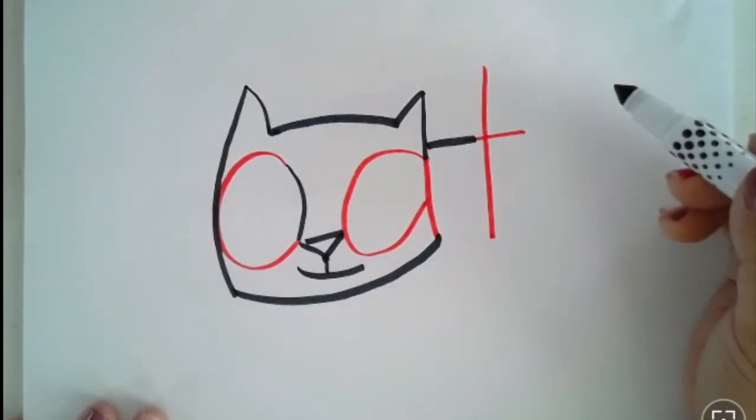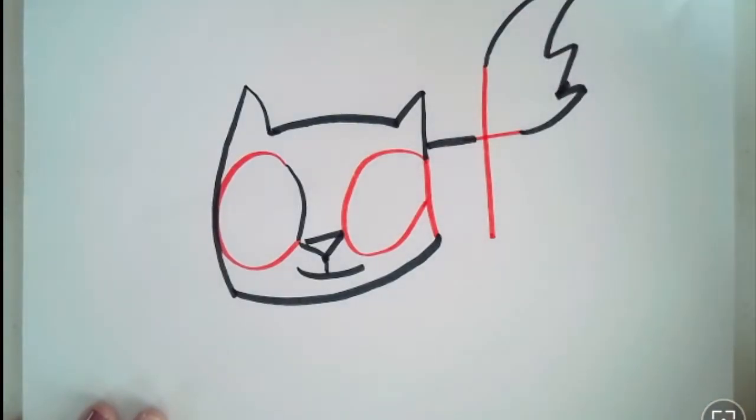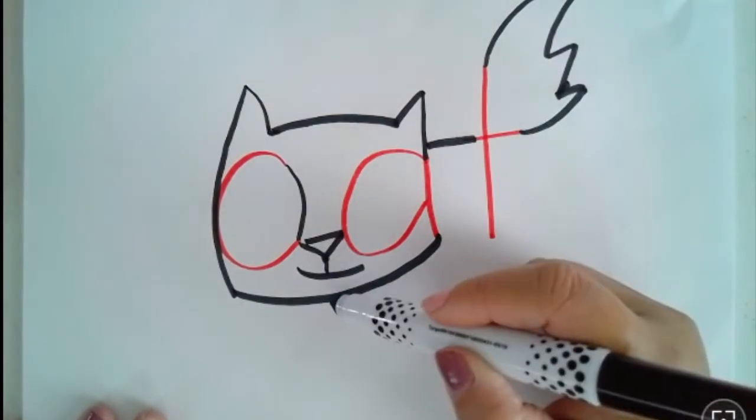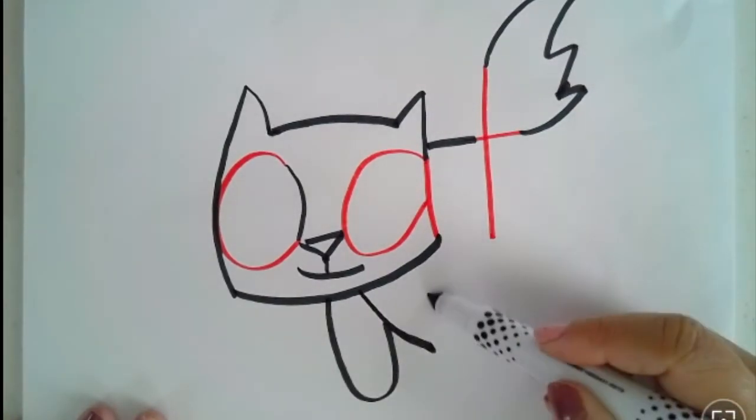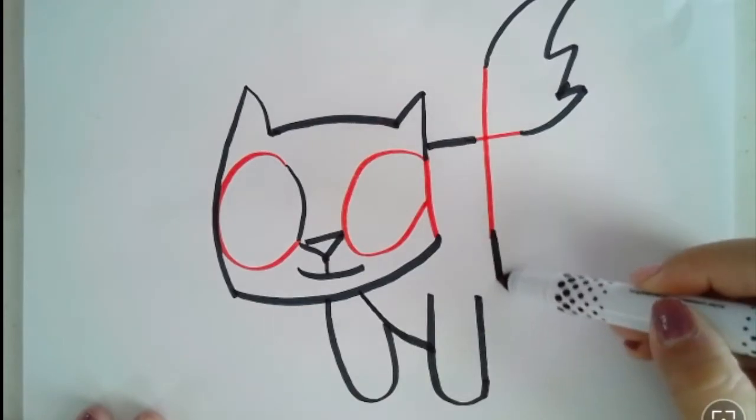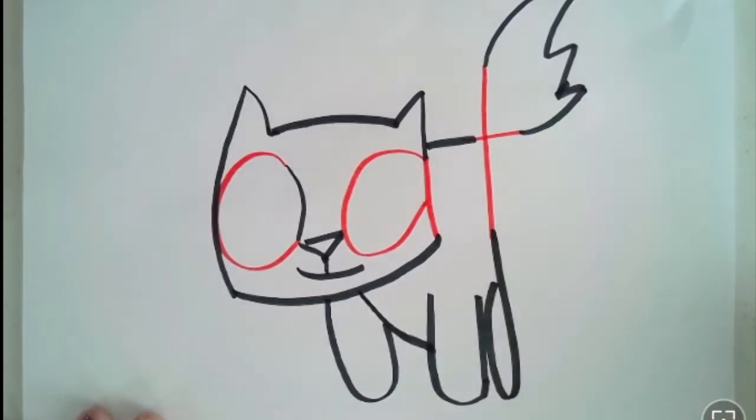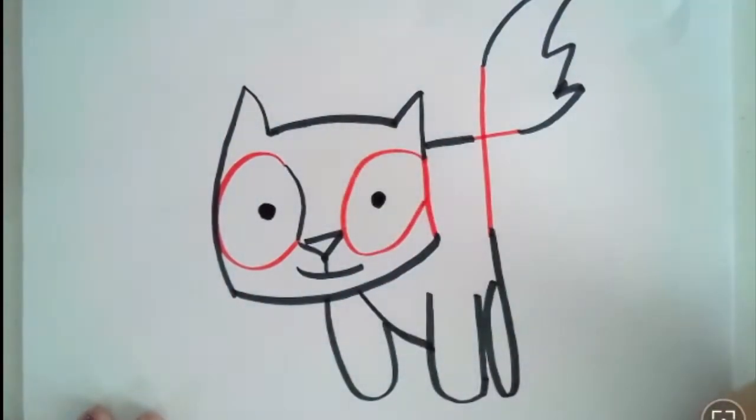We're going to connect the A to the T, that's the body. And with the T we're making a tail with the wispy fur. For underneath the body make one leg and then from the middle of the body make another leg. Then from the last part of the T we're going to drop down and make the last leg. Then we're going to add some pupils for the eyes and here we have cat.